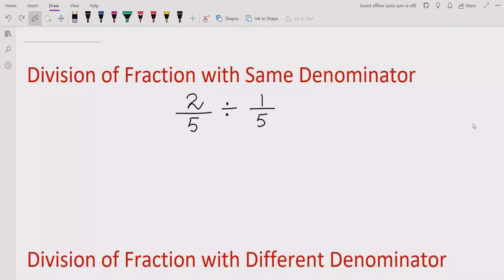Okay, now start the topic, division of a fraction with same denominator. So here we have the denominator is 5. Both denominators are same. So now we have to divide both of them. So here the sign is divided. So we will not apply multiplication like multiply numerator with numerator and denominator with denominator. No,